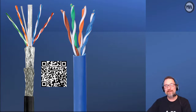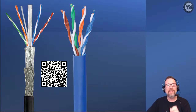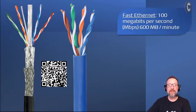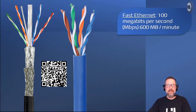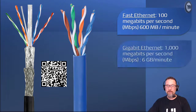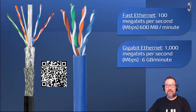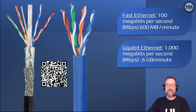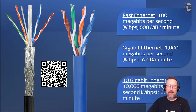If you want to find out more about these cables, there's a QR code — scan it and go check it out. Now let's look at the speeds. Fast Ethernet is typically 100 megabits per second, which equates to about 600 megabytes per minute. Then we have Gigabit Ethernet, which is really nice — that is 1,000 megabits per second, like downloading stuff at 6 gigabytes per minute.